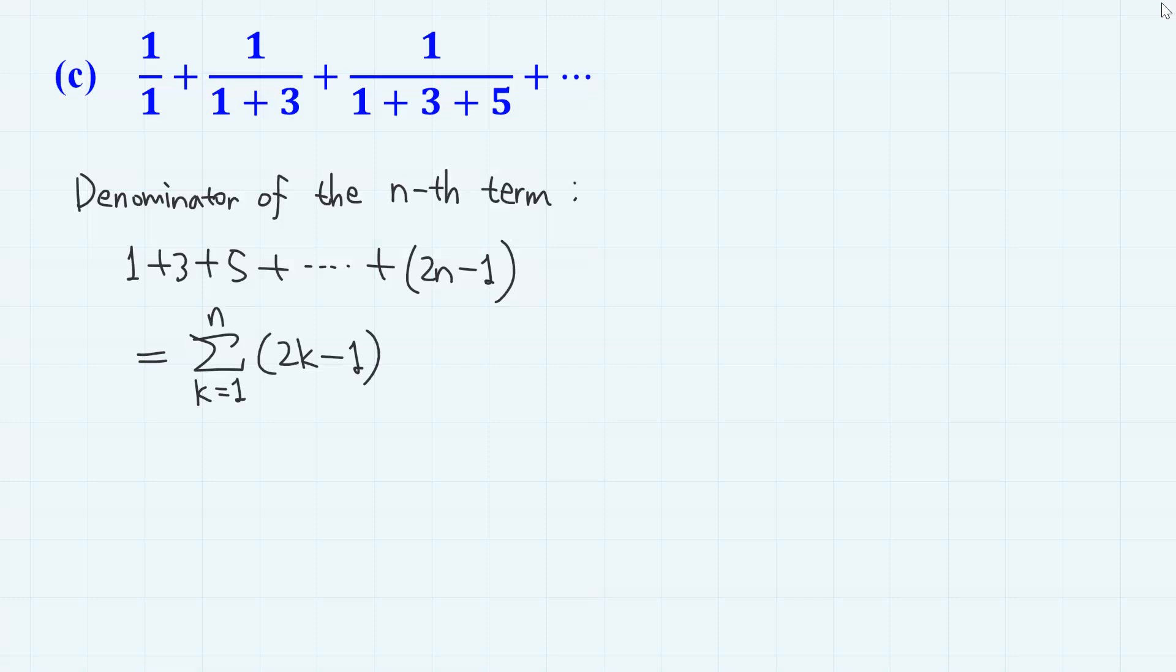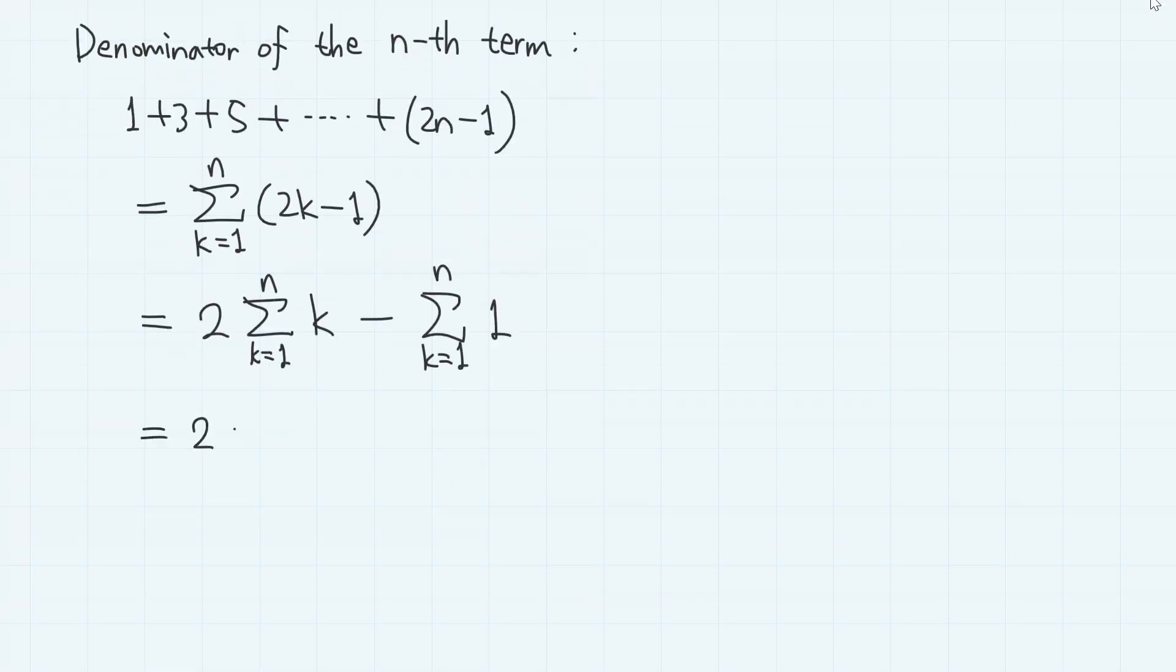This is a rather simple sigma calculation, so let's carry on. So, this can be written as 2 times sigma k minus sigma 1. So, we have 2 times n, n plus 1 over 2 minus just n, which gives n squared.